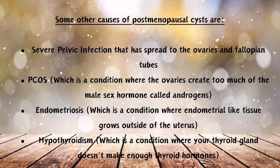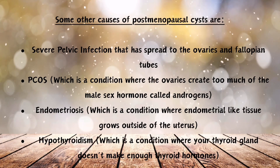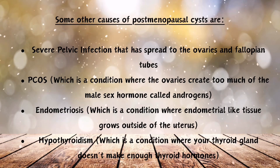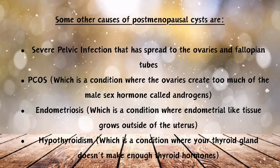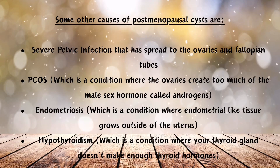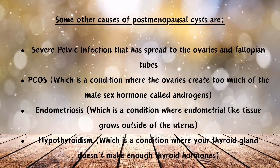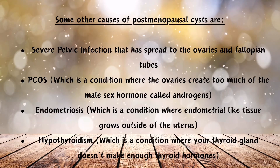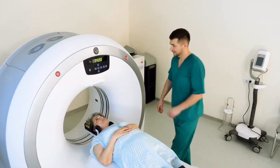Other causes of postmenopausal cysts include severe pelvic infection that has spread to the ovaries and fallopian tubes; PCOS, a condition where the ovaries create too much of the male sex hormone called androgens; endometriosis, where endometrial-like tissue grows outside of the uterus; and hypothyroidism, where the thyroid gland doesn't make enough thyroid hormones.